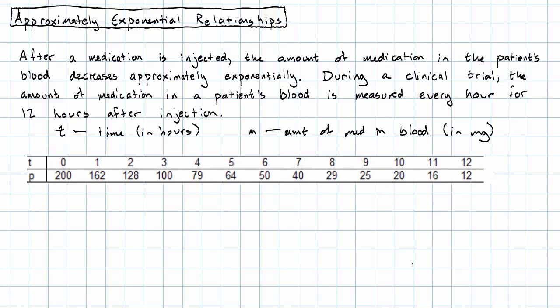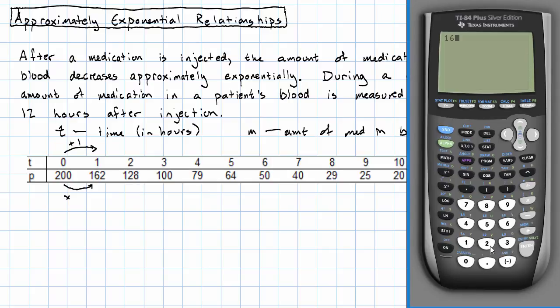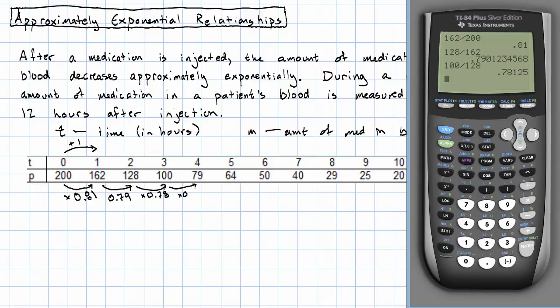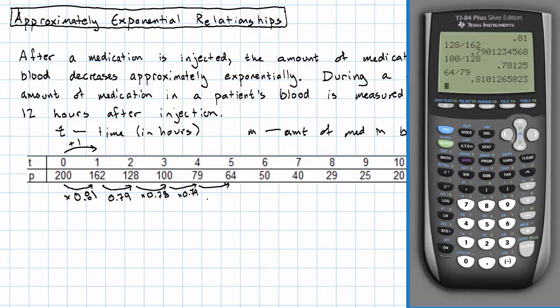Now, we can figure out what P is multiplied by every time T goes up by 1. We'll take 162 divided by 200, that's 0.81. 128 divided by 162, that's about 0.79. 100 divided by 128, that's about 0.78. 79 divided by 100, I can do in my head, that's 0.79. 64 divided by 79, that's 0.81. And we can keep going like this.